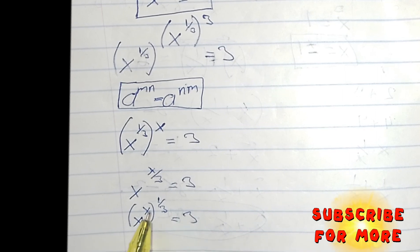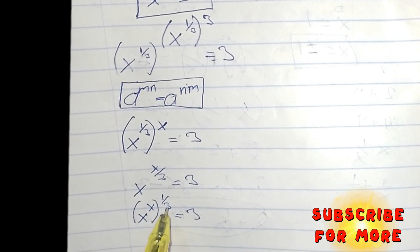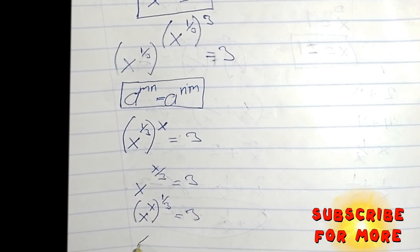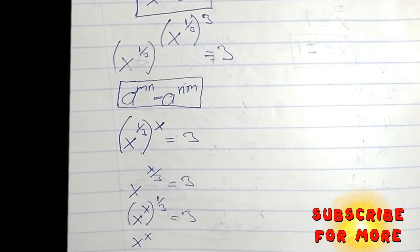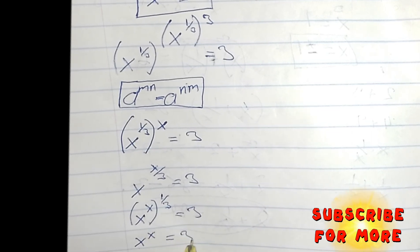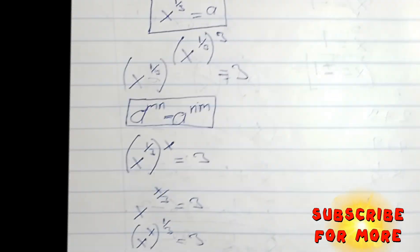I want to take this number to the right hand side so that I have variables in one side and a real number in one side. So I want to multiply the power of both sides by 3. I'm going to have X to an exponent of X is equals to 3 cubed.